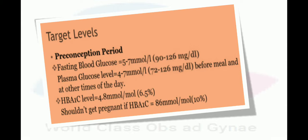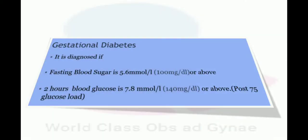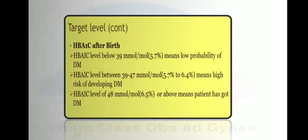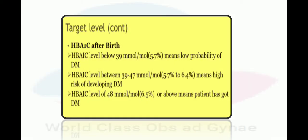Gestational diabetes is diagnosed if fasting blood glucose is 5.6 mmol/L (100 mg/dL) or above, or 2-hour blood glucose is 7.8 mmol/L (140 mg/dL) or above, post 75g glucose load. For HbA1c after birth: below 39 mmol/mol (5.7%) indicates low probability of diabetes mellitus; 39 to 47 mmol/mol (5.7–6.4%) indicates high risk of developing diabetes mellitus; 48 mmol/mol (6.5%) or above means the patient has diabetes mellitus.